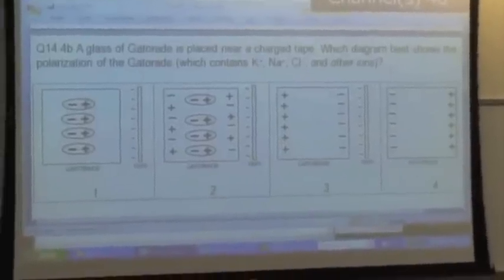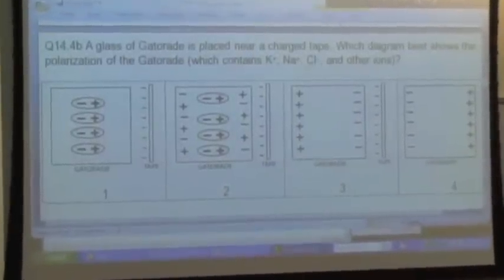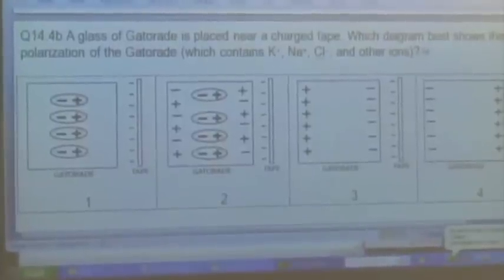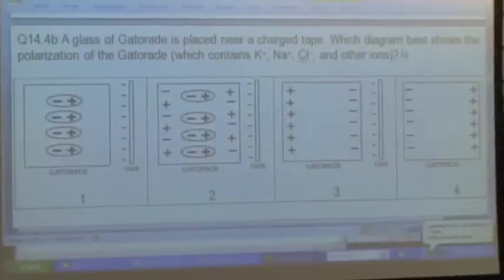This is more of an issue of a diagrammatic convention, but let's try it anyway. Glass of Gatorade is placed near a charged tape. Which diagram best shows the polarization of the Gatorade?